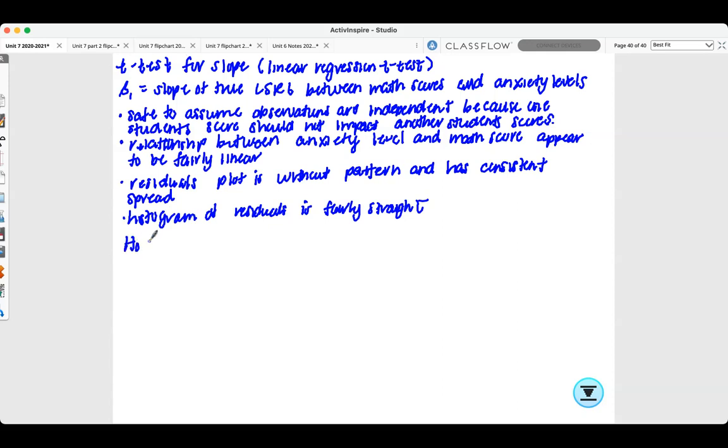Our null hypothesis is B1 or beta1 equals 0: no linear relationship between anxiety level and math scores. Our alternative hypothesis, B1 doesn't equal 0: a linear relationship between anxiety levels and math scores.